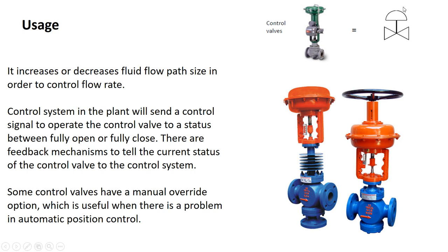A control valve has this symbol, and this is the control valve itself. It increases or decreases the fluid flow path size in order to control flow rate. A control system sends a control signal to the valve, telling it to open or close — fully open or fully close. It is basically an analog signal, and according to that, the control valve opens or closes.